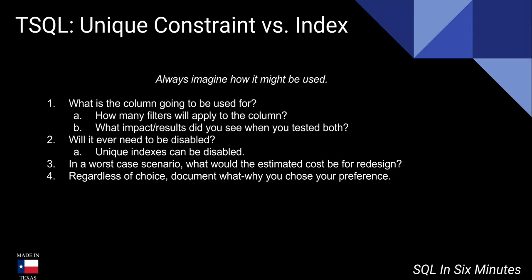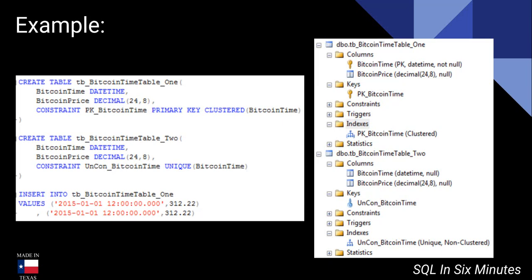Let's look at unique constraint versus unique index. Always imagine, first of all, how it will be used, what the column is going to be used for, and how many filters will apply to the column later on. Be careful about what developers tell you — they may say it'll never be used for filtering, but that's probably not going to be true. And then consider what the impact is in the results when you test both.